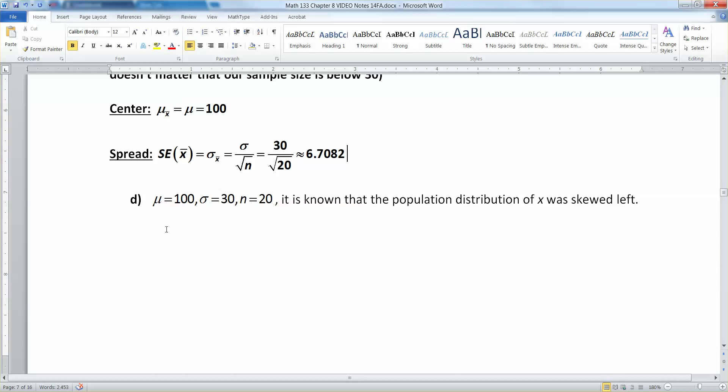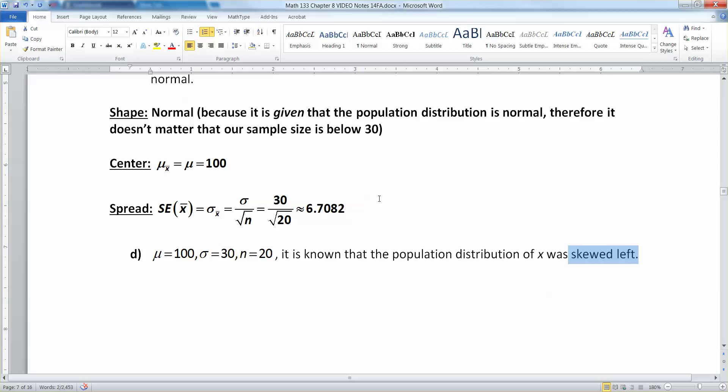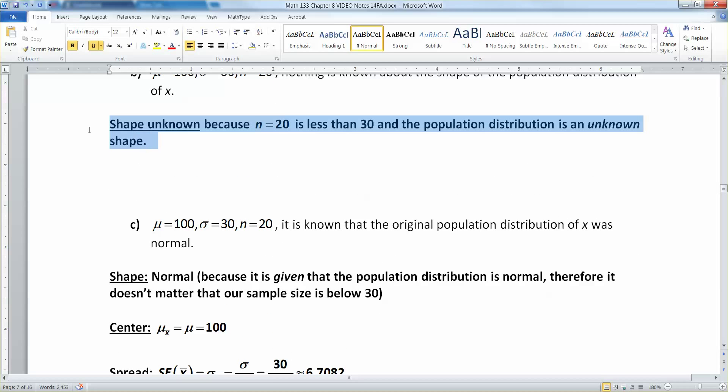Let's look at this last example. The mean is 100, sigma is 30, n is 20, and it is known that the population distribution of x was skewed left. That's an issue right there. You not only know what it is, but you know that it's not normal. Well, that would mean that you should have a sample size that is bigger than 20. So we're in trouble again.